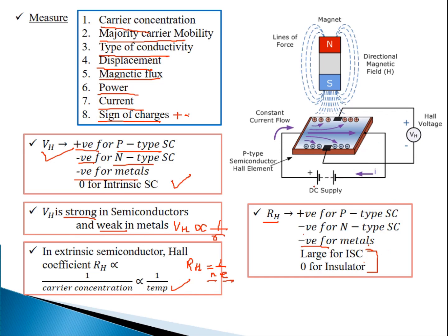In the Hall effect diagram: if holes move in one direction under the applied supply, force acts downward (negative Y). If the lower terminal is negative, the semiconductor is N-type; if the lower terminal is positive, it is P-type. This is how the Hall voltage on the second surface tells us the type of semiconductor.